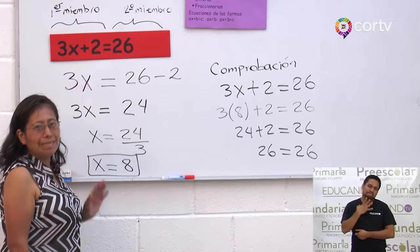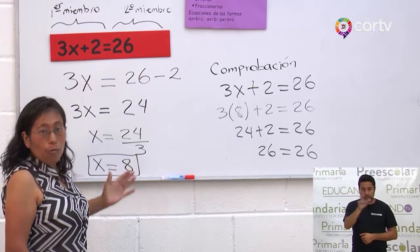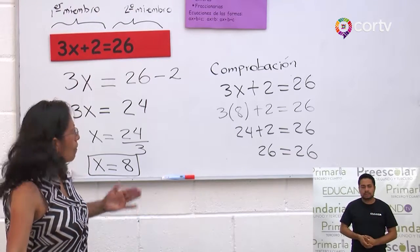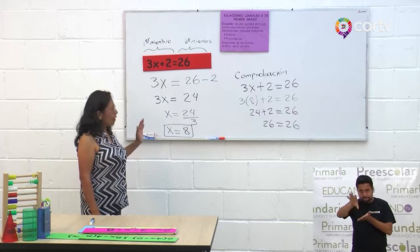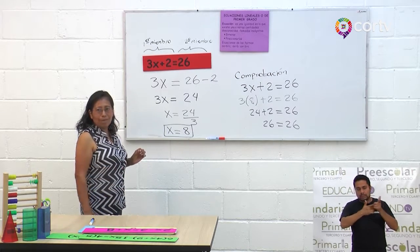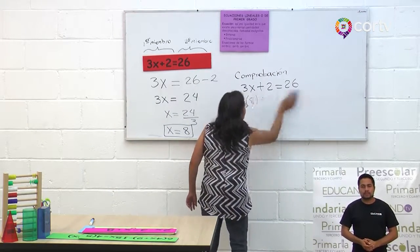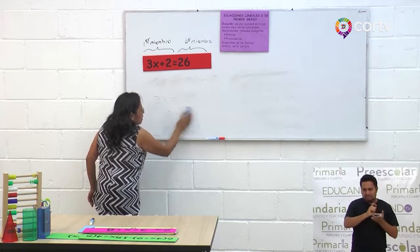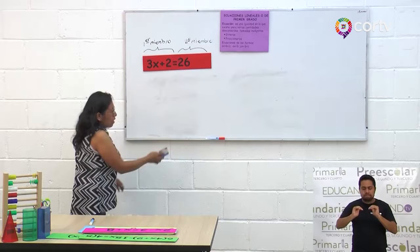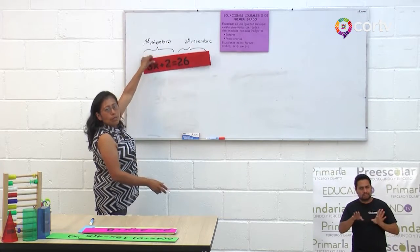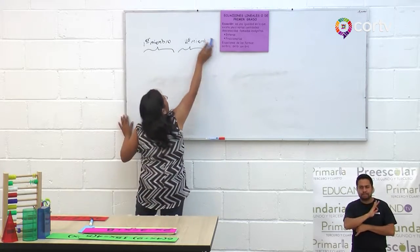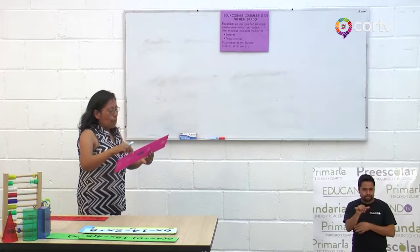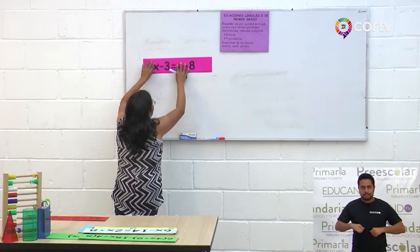Esto es lo más fácil, lo más sencillo. Recuerden que siempre partimos de lo más sencillo a lo más complejo. También podemos graficar ecuaciones, ya sea de primer grado, de segundo grado o de tercer grado. La característica de una ecuación de primer grado es que al graficarlo nos da una recta. Pero eso lo vamos a hacer en otro momento. Vamos a resolver la otra ecuación.